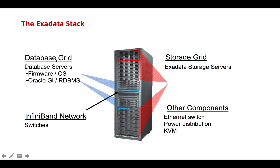The second important component is the database grid, which comprises of the database servers. This includes the firmware, operating system, the GI which is the grid infrastructure, and the RDBMS. Taking an example of a full rack of Exadata with eight database servers, we have four database servers at the top and four at the bottom, shown in blue.